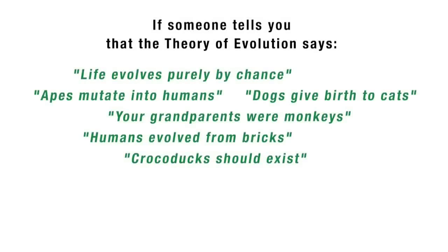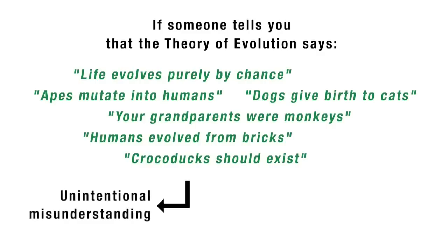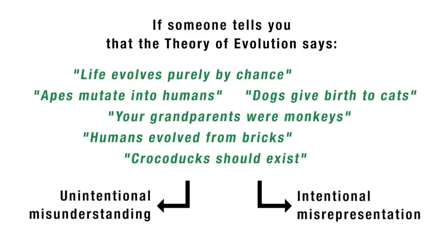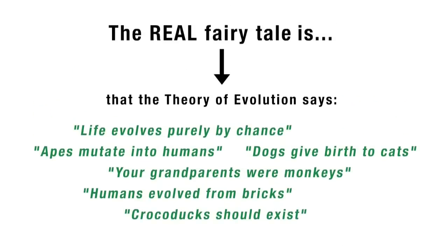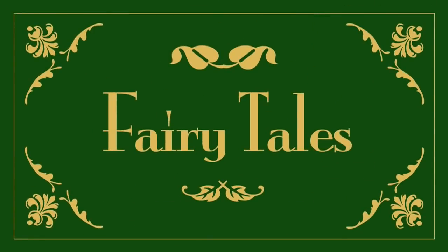If someone tells you that the theory of evolution says any of the following, then they either simply misunderstand it or they're deliberately misrepresenting it and trying to create confusion about science in the hope of gaining more support for their position. Either way, attempts to make evolution seem like a fairy tale — by both the misinformed and the dishonest — will continue to be exposed. The real fairy tale is the claim that evolution has anything to do with dogs giving birth to cats, individual animals morphing into other species, or life popping into existence through pure accident. Anyone who knows and accepts evolution finds these ideas just as ridiculous as the anti-evolutionist does.